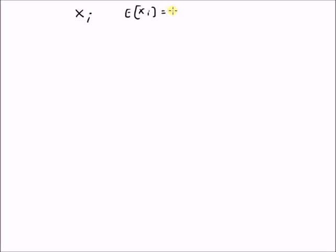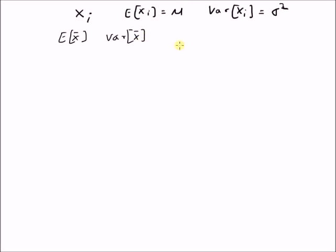The sample mean can be described as the estimator for the true mean. Given that we have a random variable X_i, which has a true mean equal to mu and variance of X_i equal to sigma squared. We want to derive the mean of the sample mean, that is expectation of X-bar, and also the variance of X-bar, where X-bar is equal to 1/n times the summation i=1 to n of X_i, where X_i has true mean equal to mu and variance equal to sigma squared.